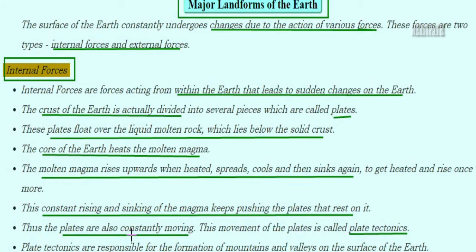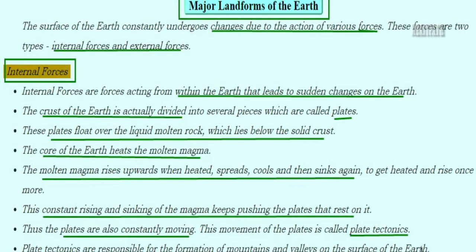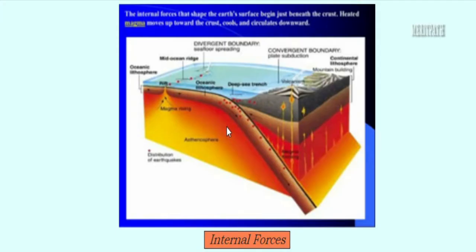So, on the Earth, inside we have crust divided into plates, and the plates float over liquid molten rock. The innermost part — the core — gets heated and causes the magma to spread, pushing the plates along with it. This movement of the plates is known as plate tectonics, which results in the formation of mountains and valleys on the surface of the Earth. In this image, students, you can see the internal forces of the Earth: the land surface, the crust divided into plates, the molten rock in fluid-like consistency, and the innermost core.